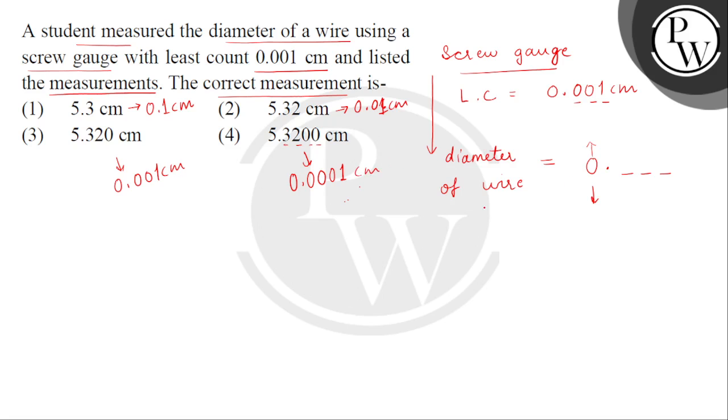Tho hum dek satte hai ki jo hume data mil raha hai that is diameter of wire that is 5.320 cm. Tho ye up to 3 places decimal hai. Tho ye least count se match karta hai. Tho we have the correct answer as option 3.